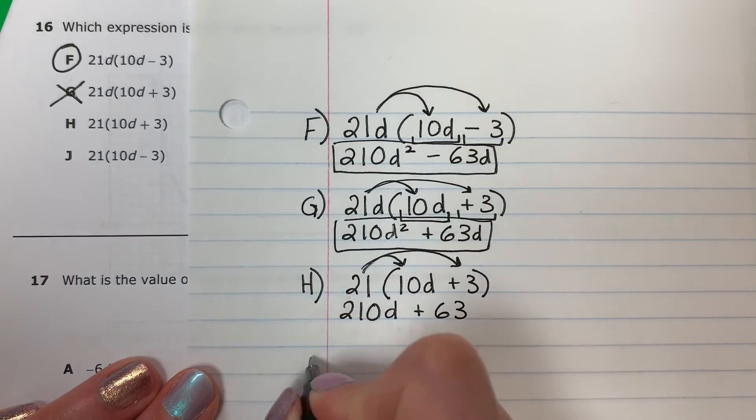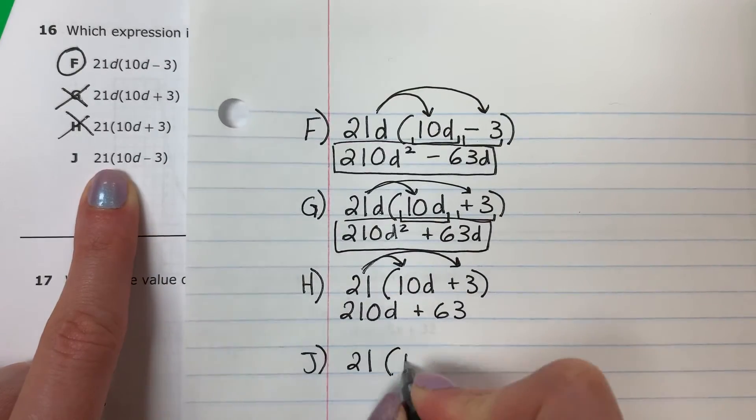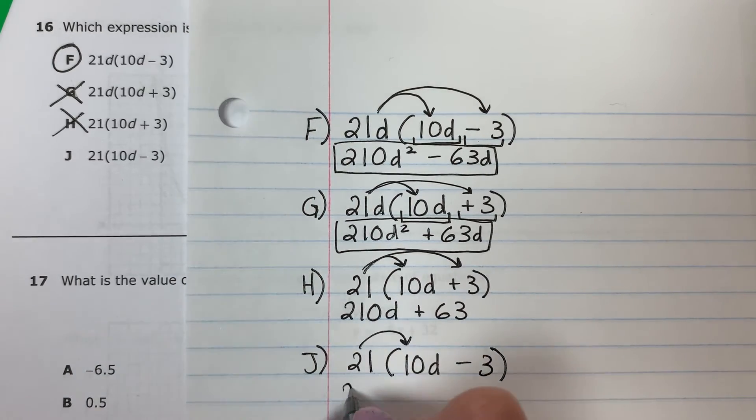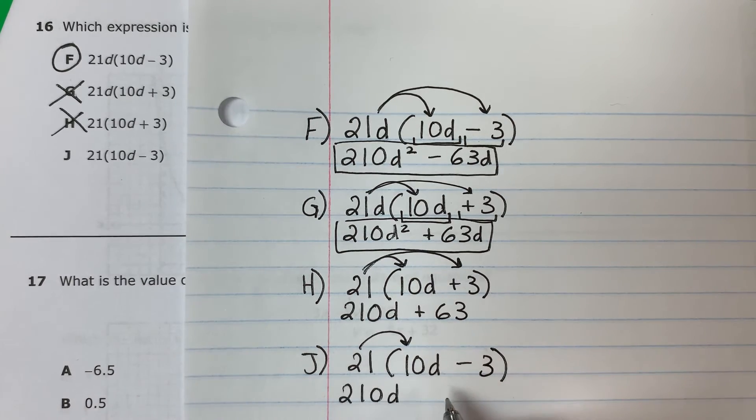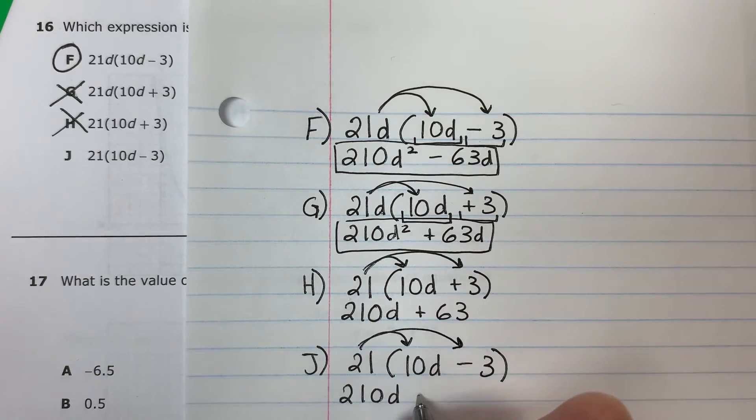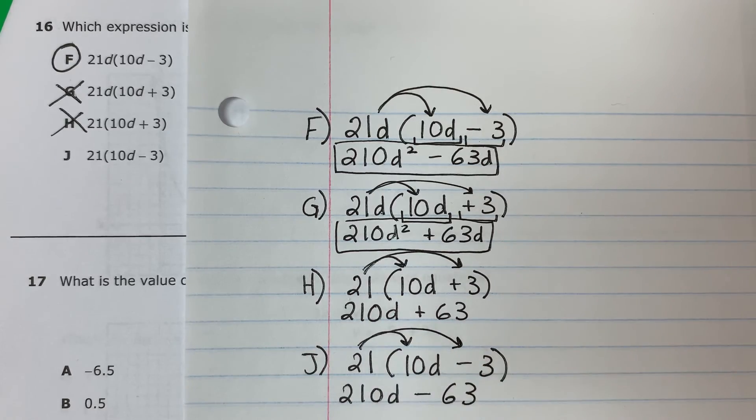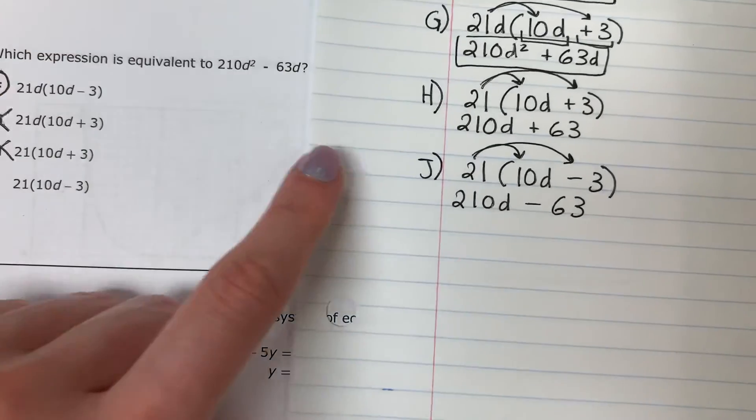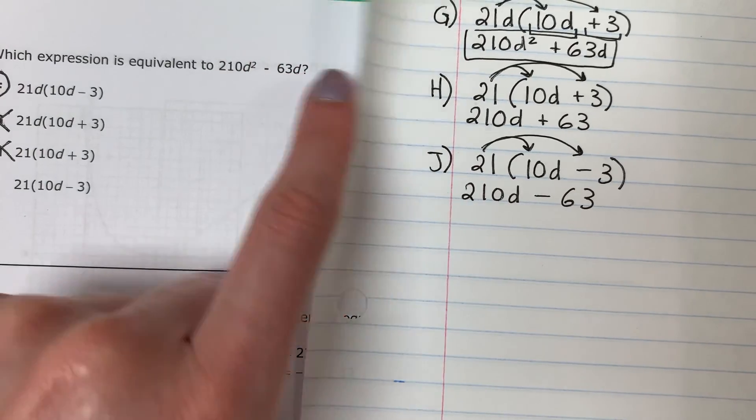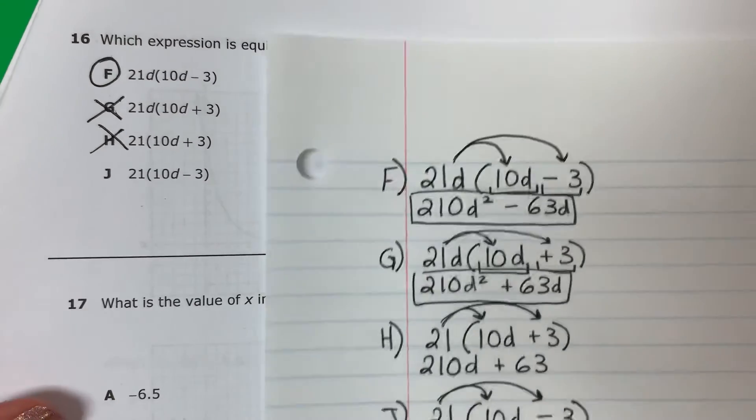Okay. One more. J. So 21 times 10 D minus 3. So 21 times 10, veintiuno por 10, 210 D. Only one D. Solamente un D. 21 times negative 3. Veintiuno por negativo 3. Negative 63. No D. Sin D. Because none of them have a D. Ninguno tiene D. So again, otra vez, it's not the answer. No es la respuesta. Because here there's no squared. No hay cuadrado. Here there's no D. Aquí no hay D. Okay. So your answer is the first one. La respuesta es la primera.